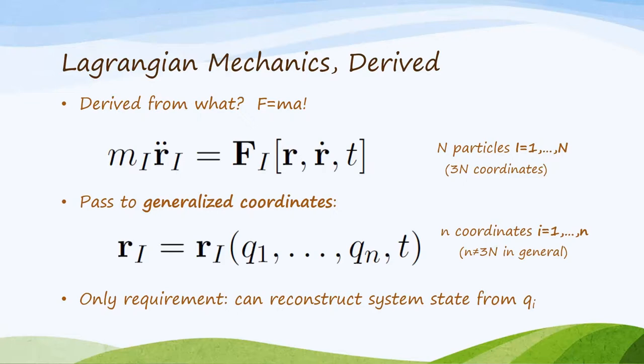And while it can be simplest to think about the case where little n equals 3 times capital N, so that you have the same number of coordinates, the power of this formalism actually comes from the fact that you don't need to, and all of the mathematics in this video will apply to those cases. The only thing we require is that we can always get r sub i from these q sub i.